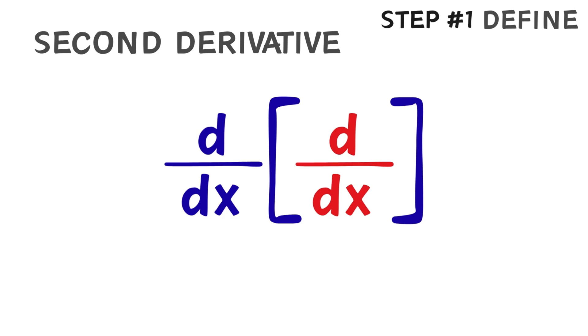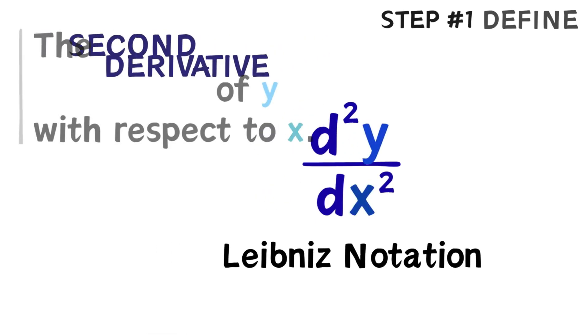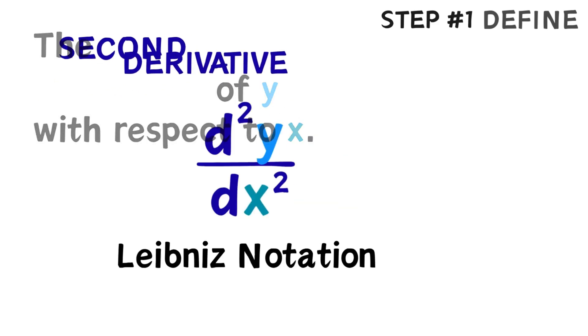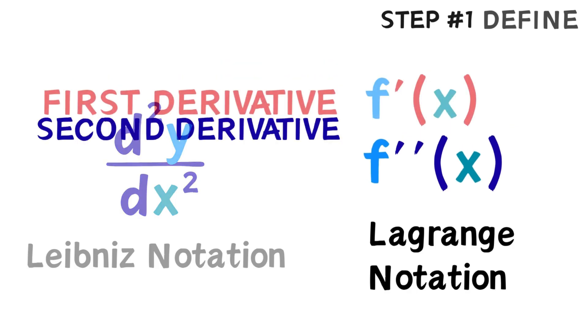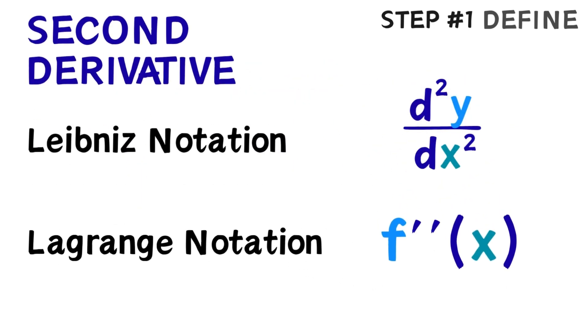The notations for the second derivative are pretty straightforward. From what we have here, if we combine the double derivative symbols, we get the Leibniz notation. This here can be read as the second derivative of y with respect to x. Another common notation is the Lagrange notation. It's like the derivative, but with an extra apostrophe. Both of these mean the same thing.